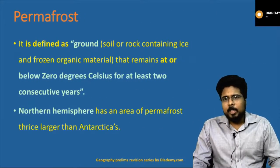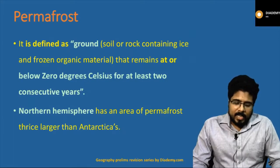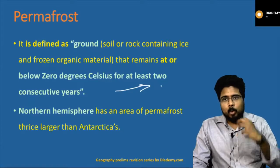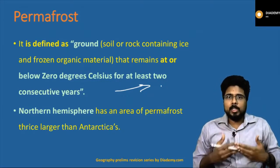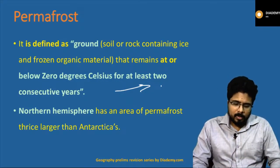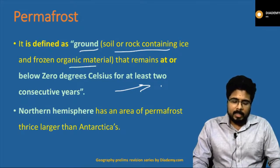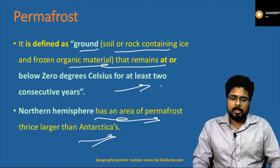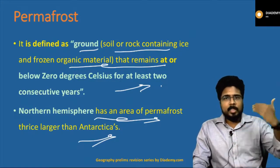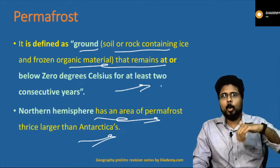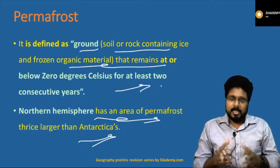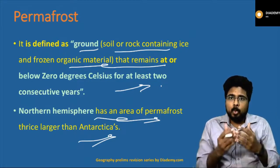Next: permafrost. Permafrost is defined as ground — soil or rock containing ice and frozen organic material — that remains at or below 0 degrees centigrade for at least 2 consecutive years. Research has found that the Northern Hemisphere has an area of permafrost three times larger than Antarctica's. This is because regions like Greenland, the Arctic, and the northern part of Asia are very cold, and the Northern Hemisphere also has more land mass than the Southern Hemisphere.